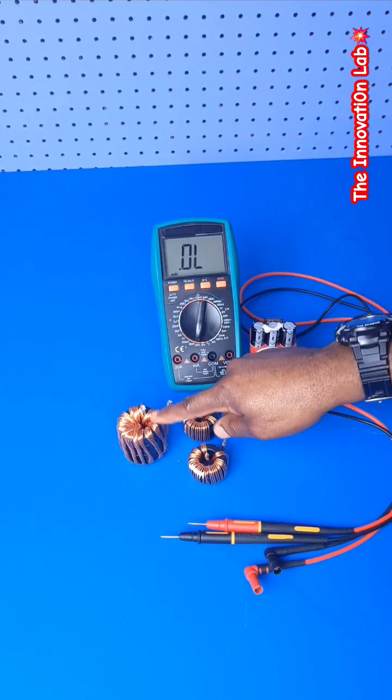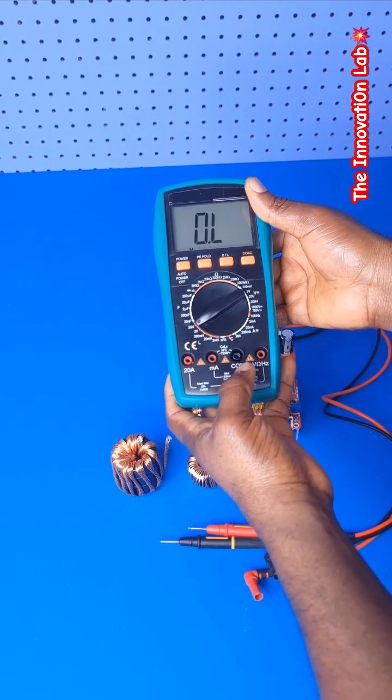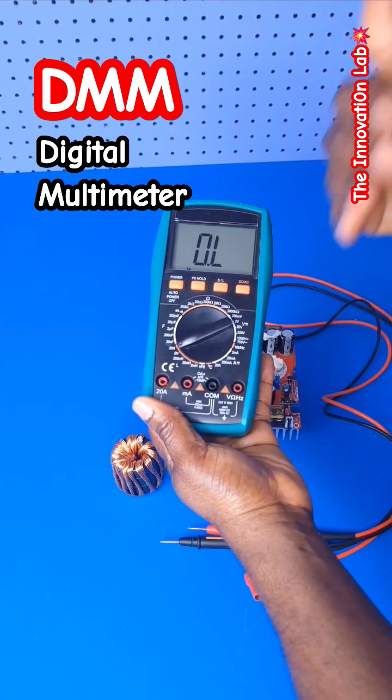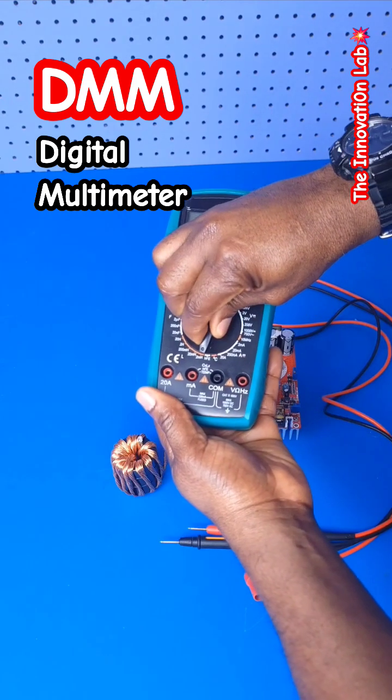For something like this, all you need is a DMM that can measure inductance and make sure that you set it within the range of the inductance that you're hoping to measure.